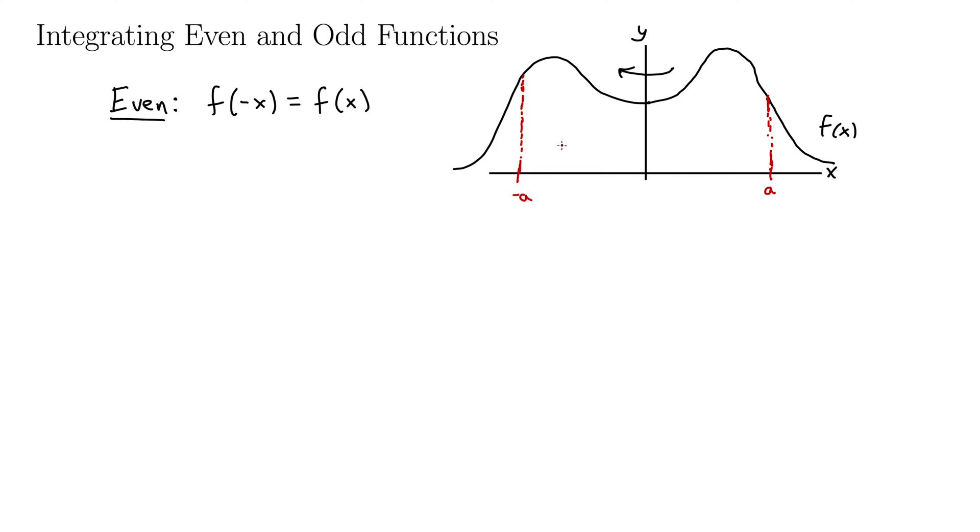So we can think of this as A1 over here perhaps, and maybe A2 over here. And then note that the total area under the function from negative a to positive a is simply A1 plus A2.